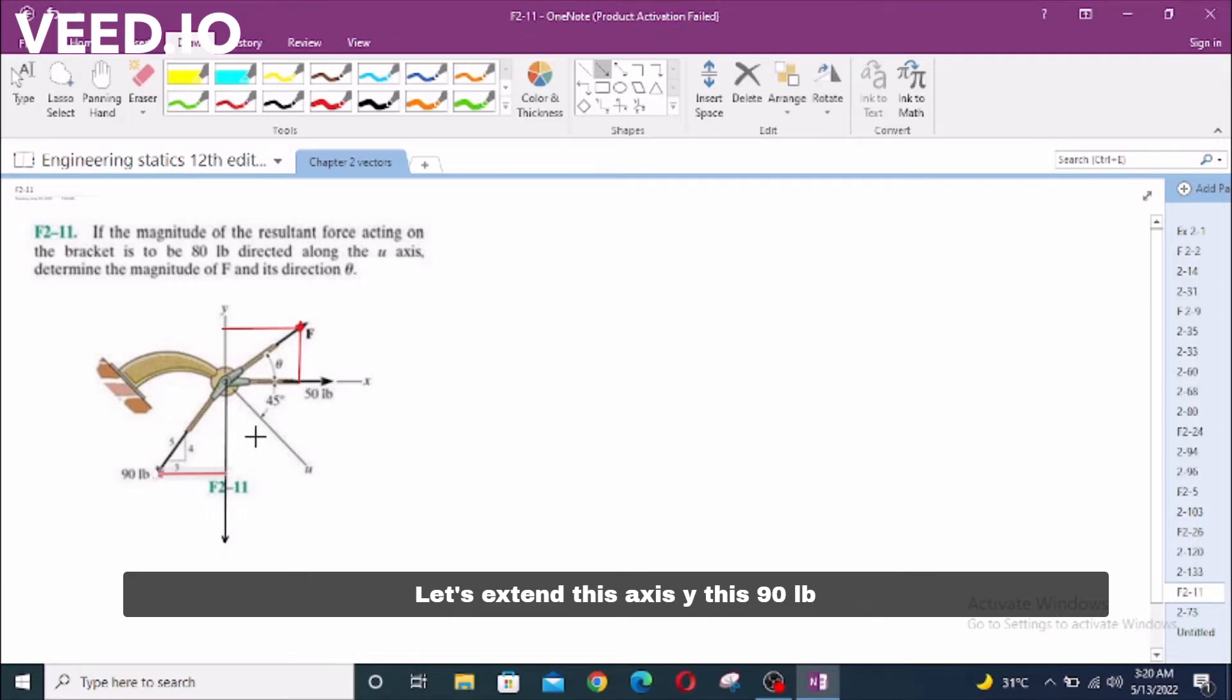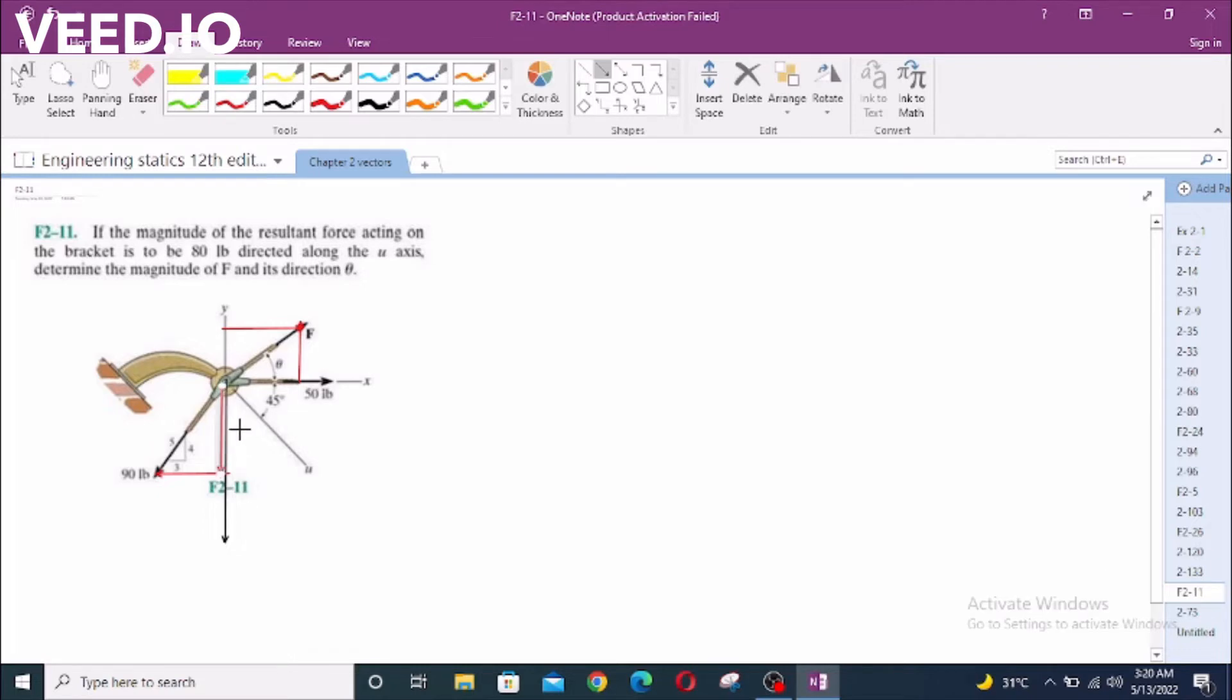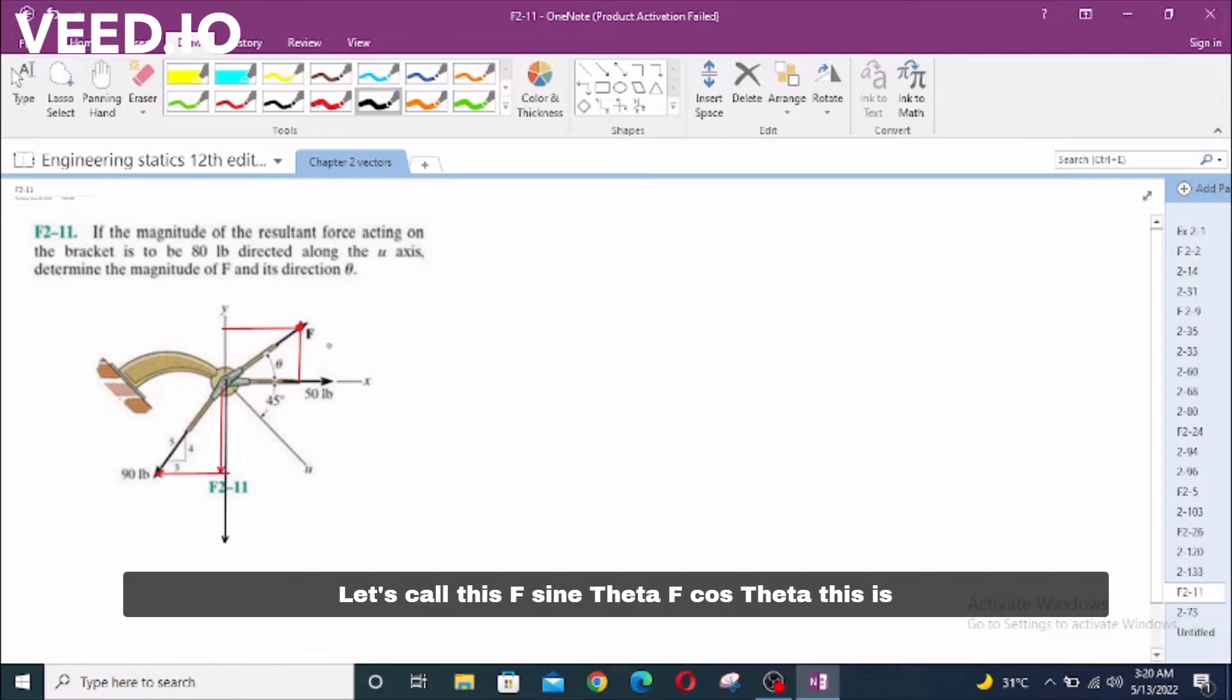This 90 lb force has one component parallel to the X-axis and one component parallel to the Y-axis. Let's call this F sin theta, F cos theta. This is 90 sin phi.